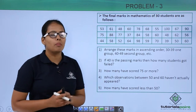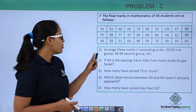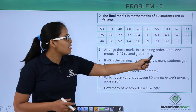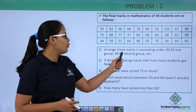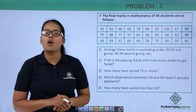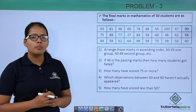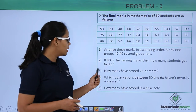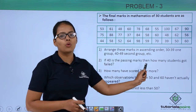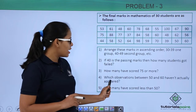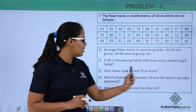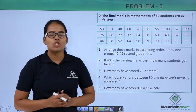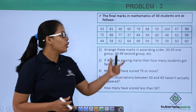Now, what are the questions asked based on these observations? First, arrange these marks in ascending order taking class size 30 to 39 as one group, 40 to 49 as the second group, and so on. Second, if 40 is the passing marks, how many students got failed? Third, how many have scored 75 or more? Fourth, which observations between 50 and 60 haven't appeared? Fifth, how many have scored less than 50?